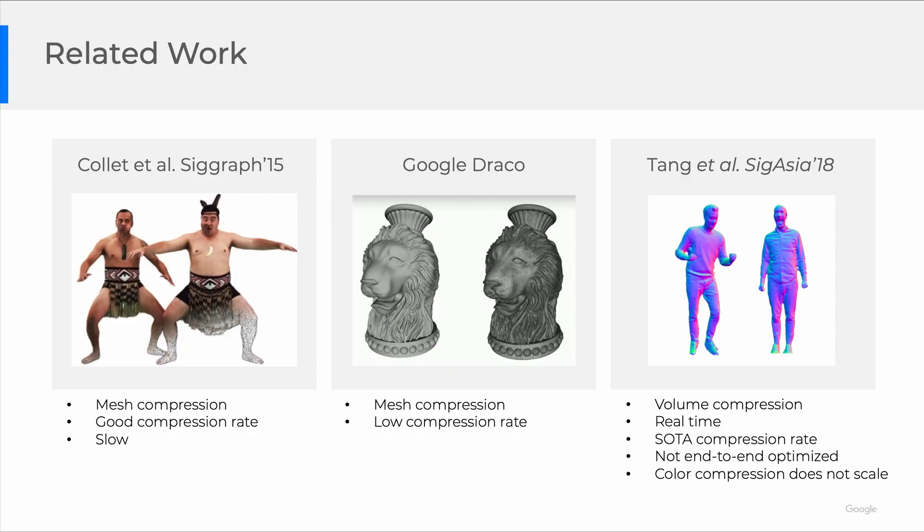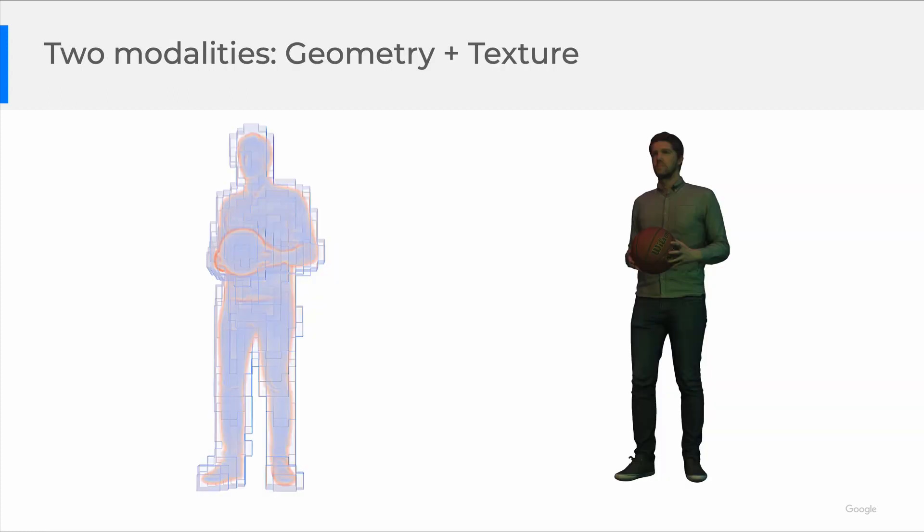There are a few existing solutions. Kole et al. and Draco are mesh compression algorithms. In contrast, our previous work from 2018 is volumetric compression with state-of-the-art efficiency and quality. However, the geometry compression part is not optimized end-to-end for optimal rate distortion trade-off. In addition, it compresses raw RGB camera streams for texture, which does not scale well with more cameras. In this paper, we provide a complete solution to compress both the geometry and texture.